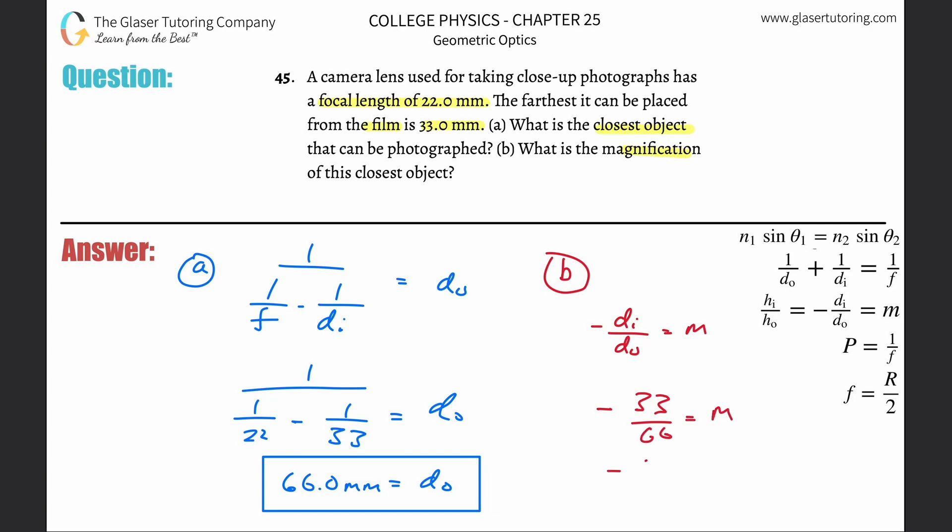This equals negative one-half, or negative 0.5—that is the magnification. This tells me that the image will be inverted, and the image is now going to be half of the object. Just look at the formula: it's di over do. So whatever this number turns out to be, you're giving information about the size of di relative to do, and the sign just tells you whether it's inverted or not.